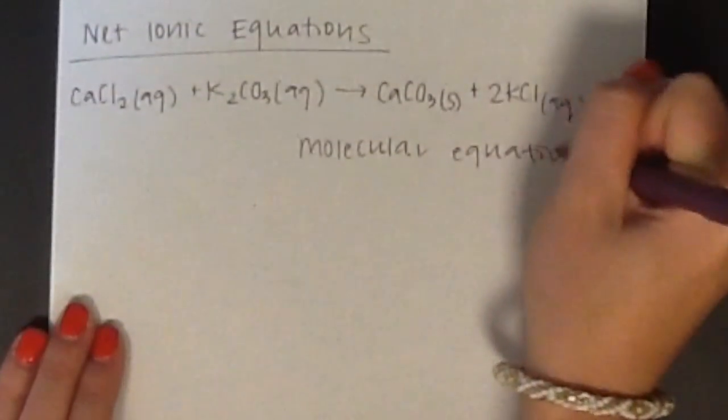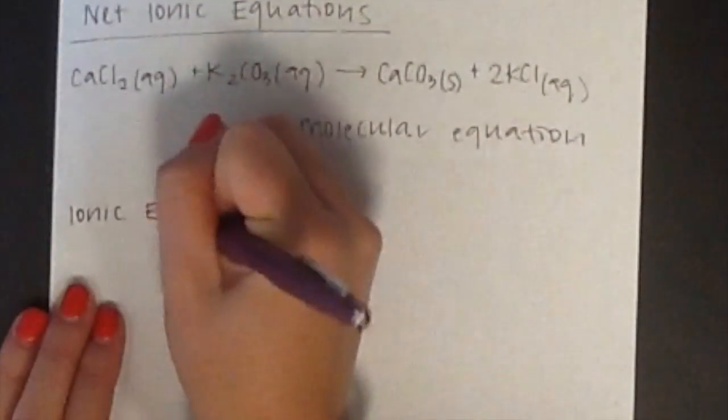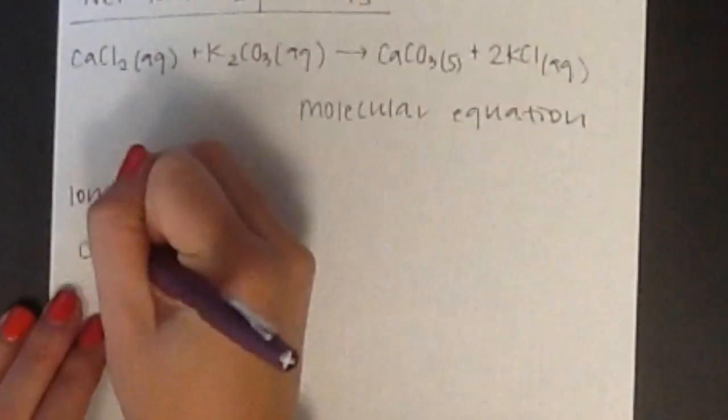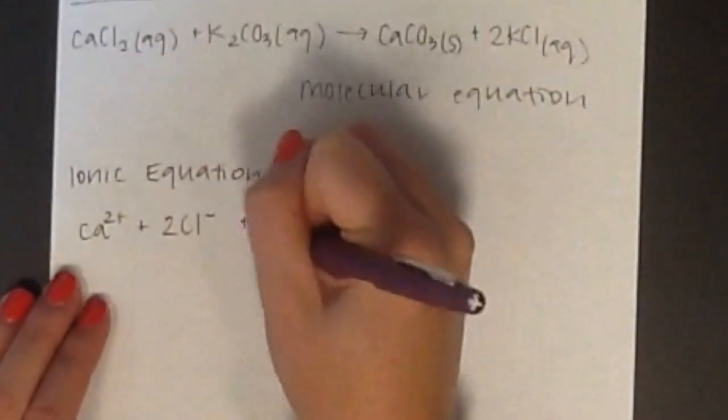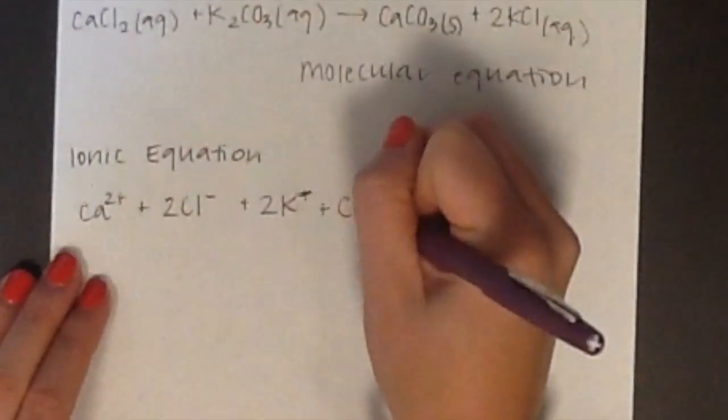To determine the ionic equation, break up your aqueous solutions into their separate ions. To determine the net ionic equation, cancel out your spectator ions.